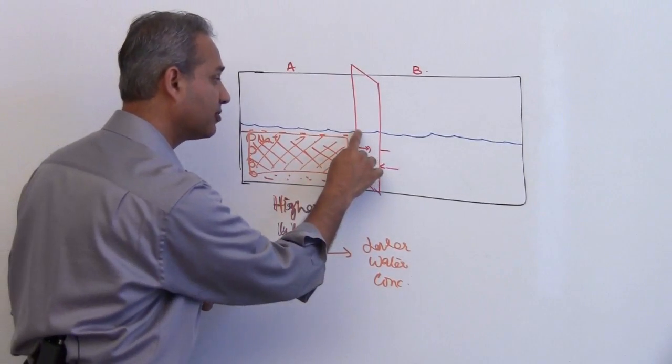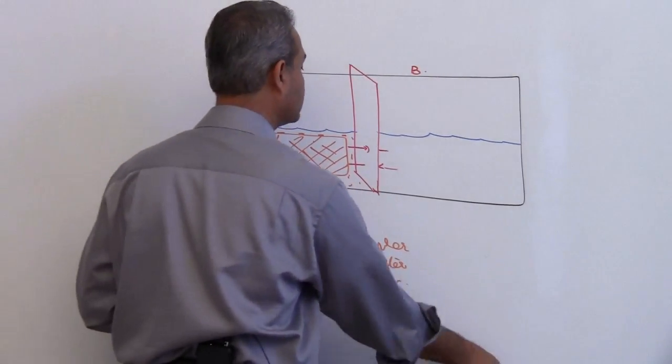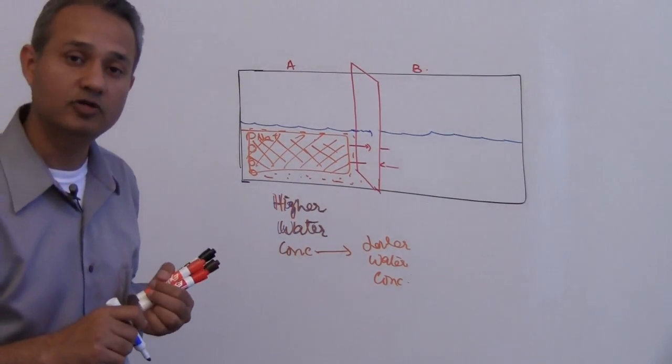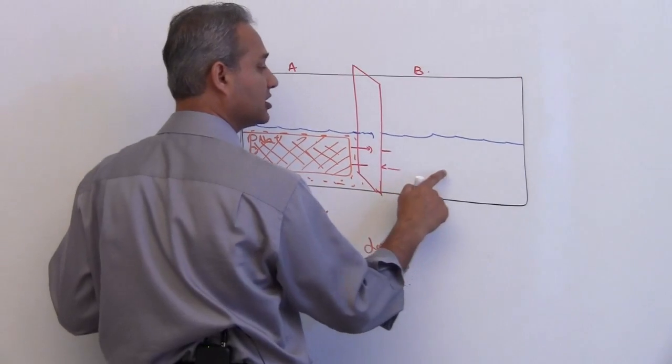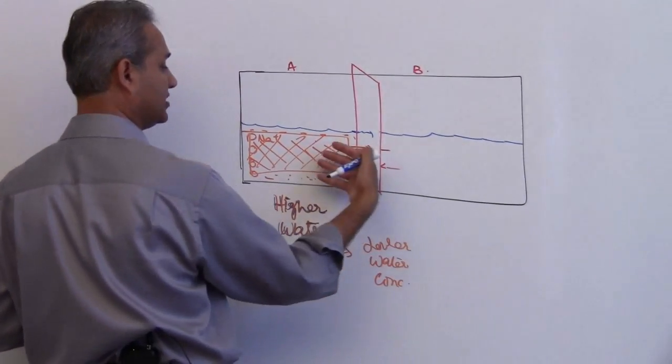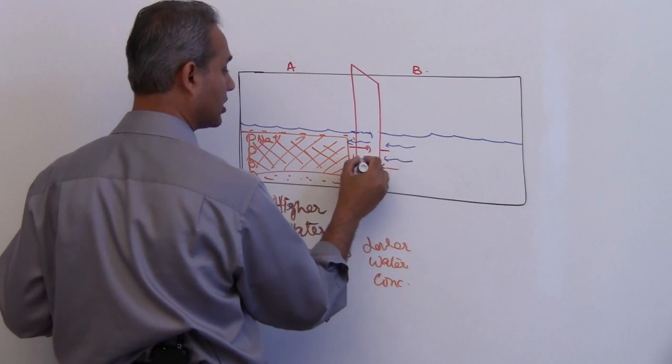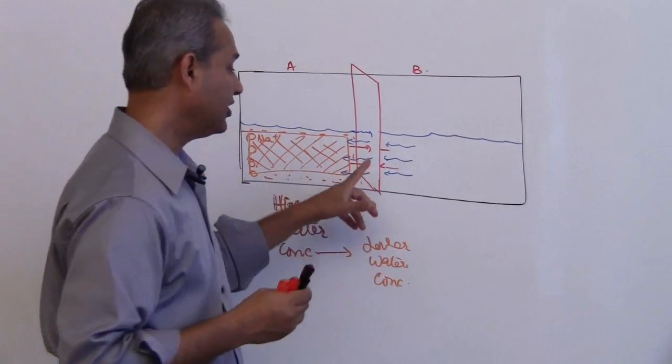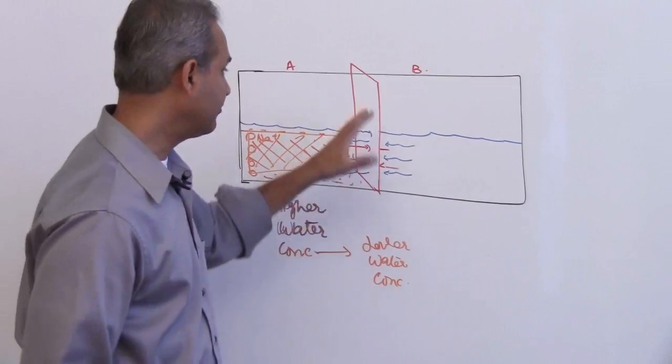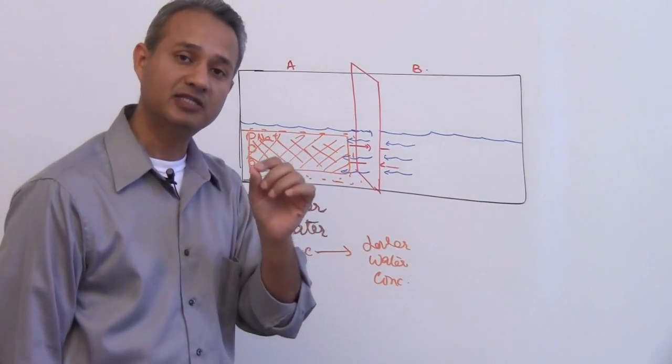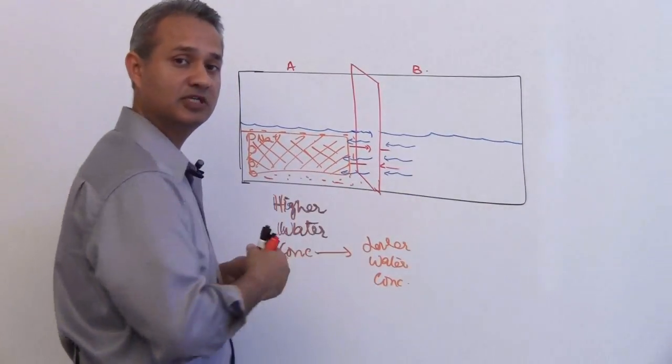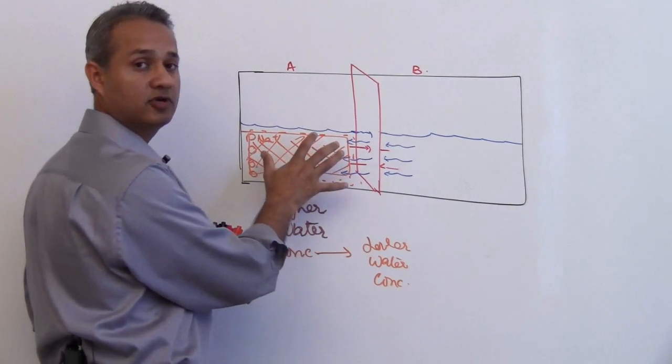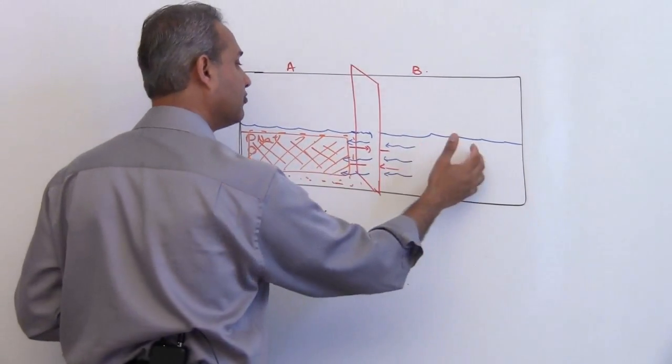This semi-permeable membrane won't let the solutes move. So who's allowed to move? Water. Water starts moving from that side to this side. The important thing: we're not allowing solutes to move. Ideally, if this membrane had large enough pores, solutes would disperse in both mediums and reach equilibrium. But now the solutes stay trapped, so water moves from that side to this side.